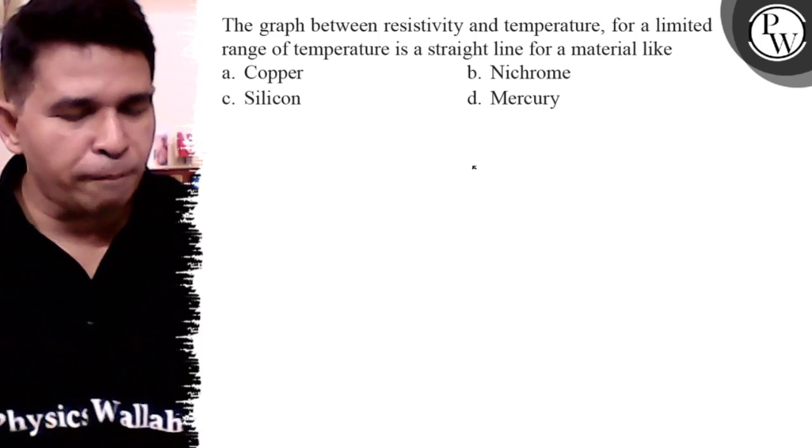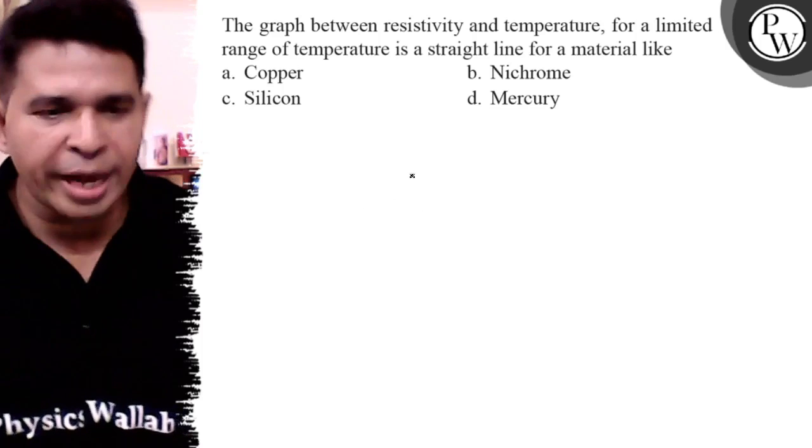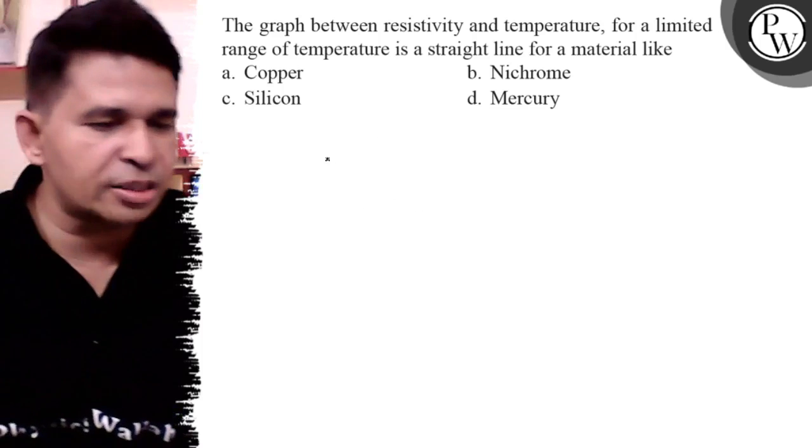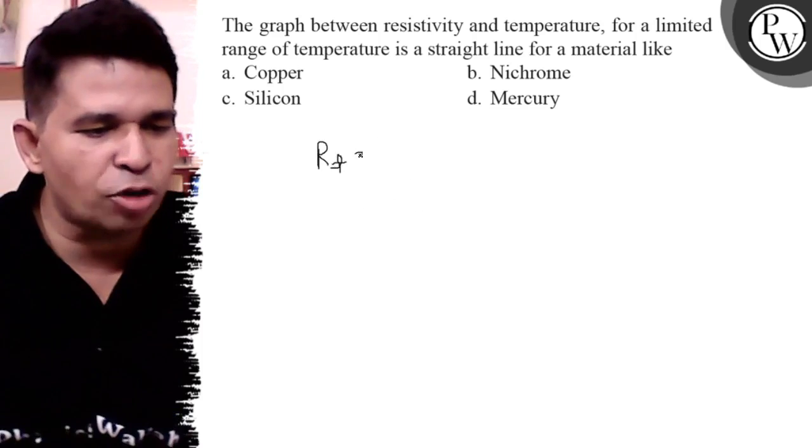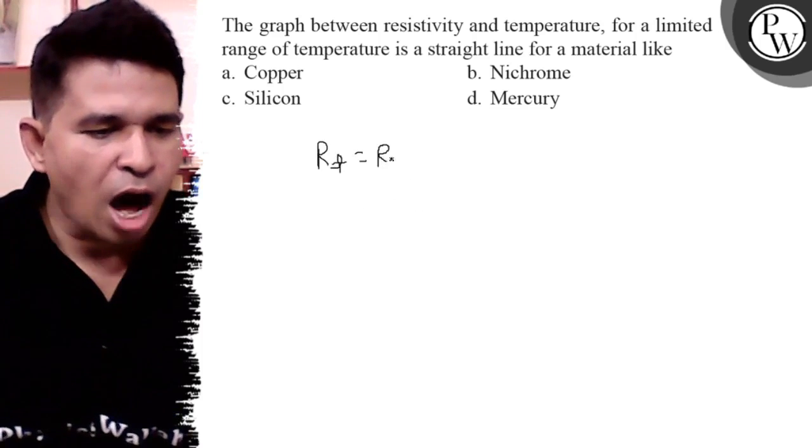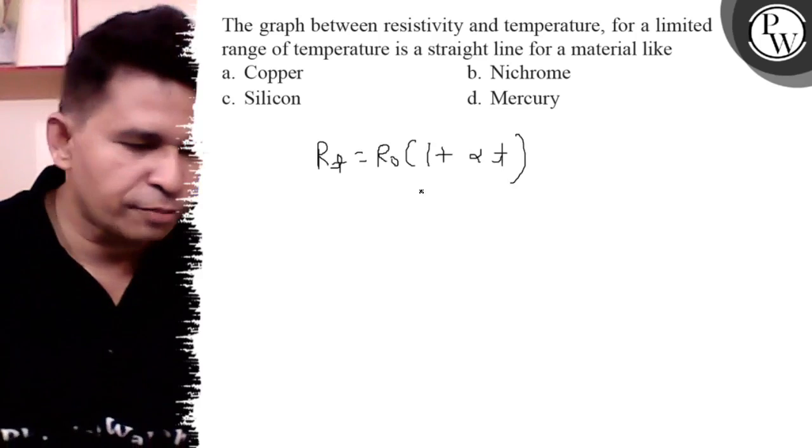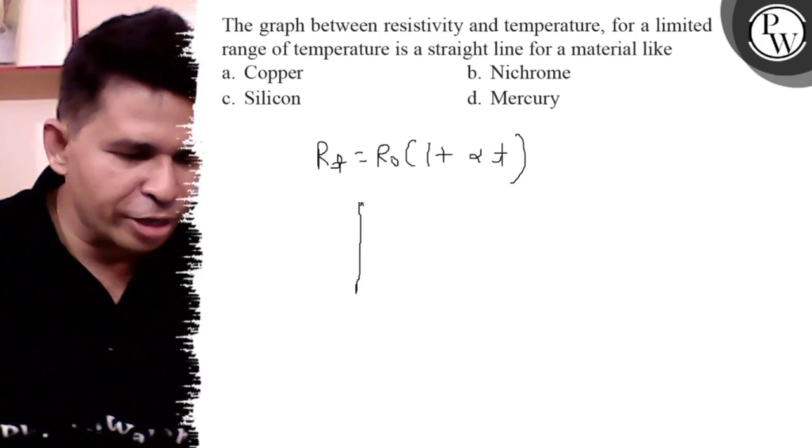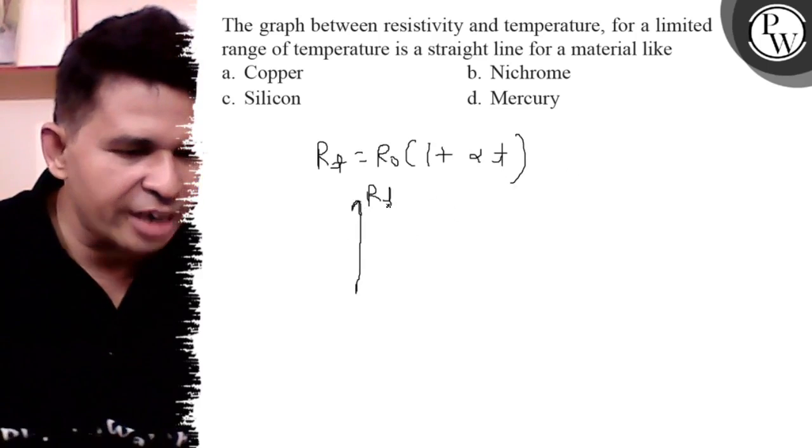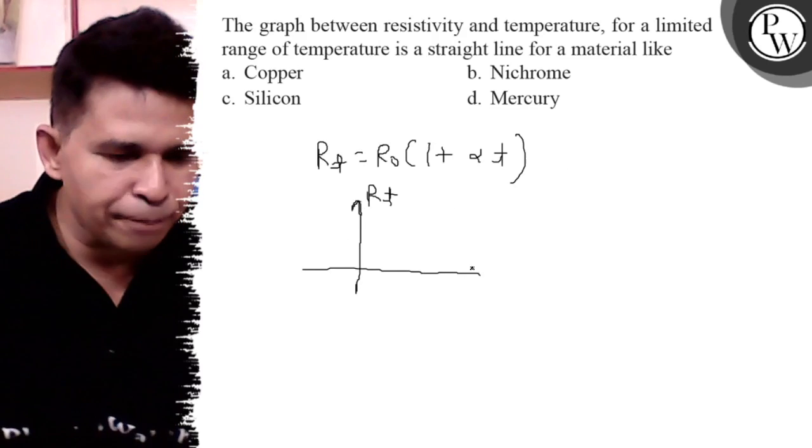Actually, nichrome is an alloy. For the alloy, always the graph is a straight line. R_T is equal to R_0 times 1 plus alpha T for nichrome. So the graph is R_T versus temperature.